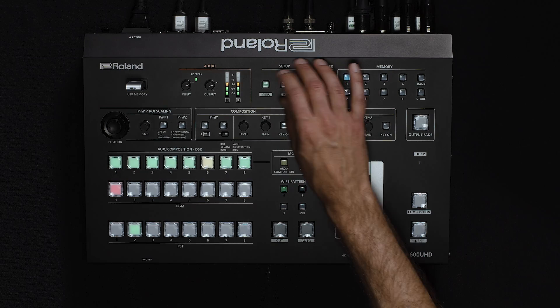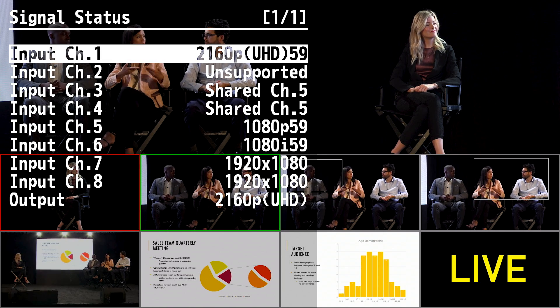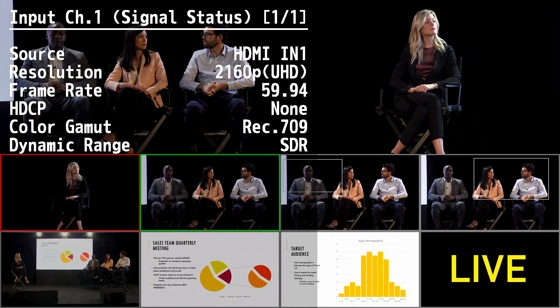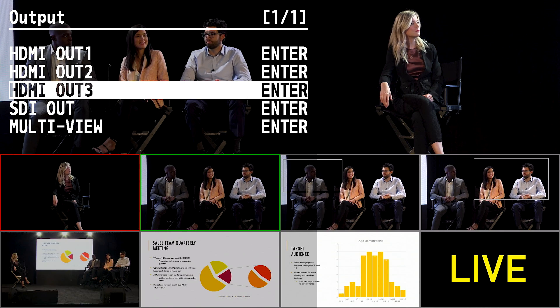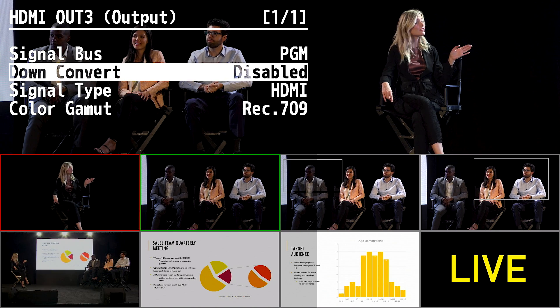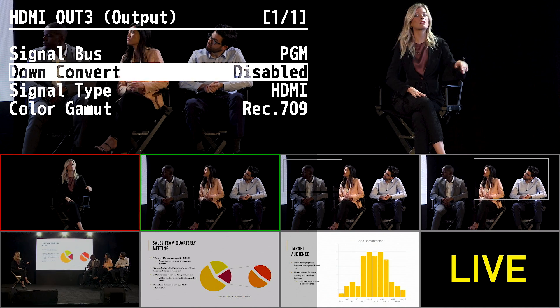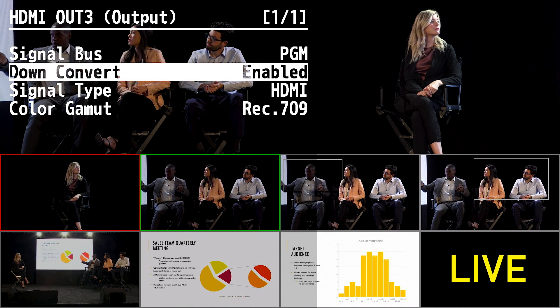You can also verify the status of an input signal by pressing the menu button and entering signal status. Here you can choose any source and get more information about the video being input into the switcher. You can also independently down convert the video outputs — press the menu button, go into the output menu, and choose the output you want to down convert. Here you can see the down conversion is disabled for HDMI output 3; by enabling it, it's now outputting HD video instead of 4K.